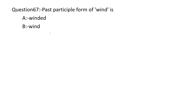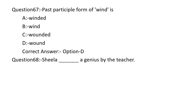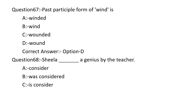Past participle form of 'wind' is: Option A: WINDED. Option B: WINDER. Option C: WOUNDED. Option D: WOUND. The correct answer is Option D — WOUND.